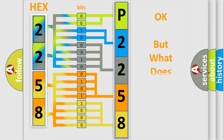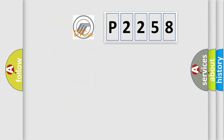The number itself does not make sense to us if we cannot assign information about what it actually expresses. So, what does the diagnostic trouble code P2258 interpret specifically for Mercury car manufacturers?